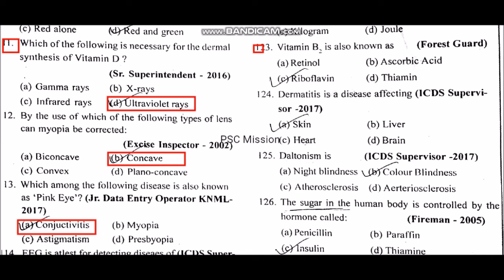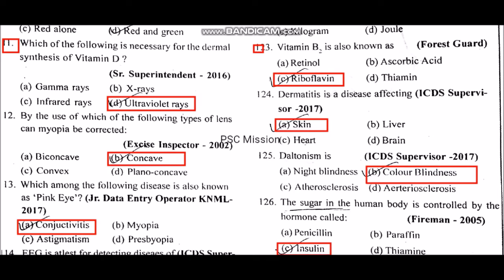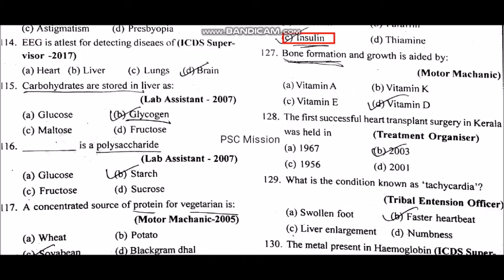Vitamin B2 is also known as riboflavin. Dermatitis is the disease affecting the skin. Daltonism is color blindness. The sugar in the human body is controlled by the hormone called insulin.